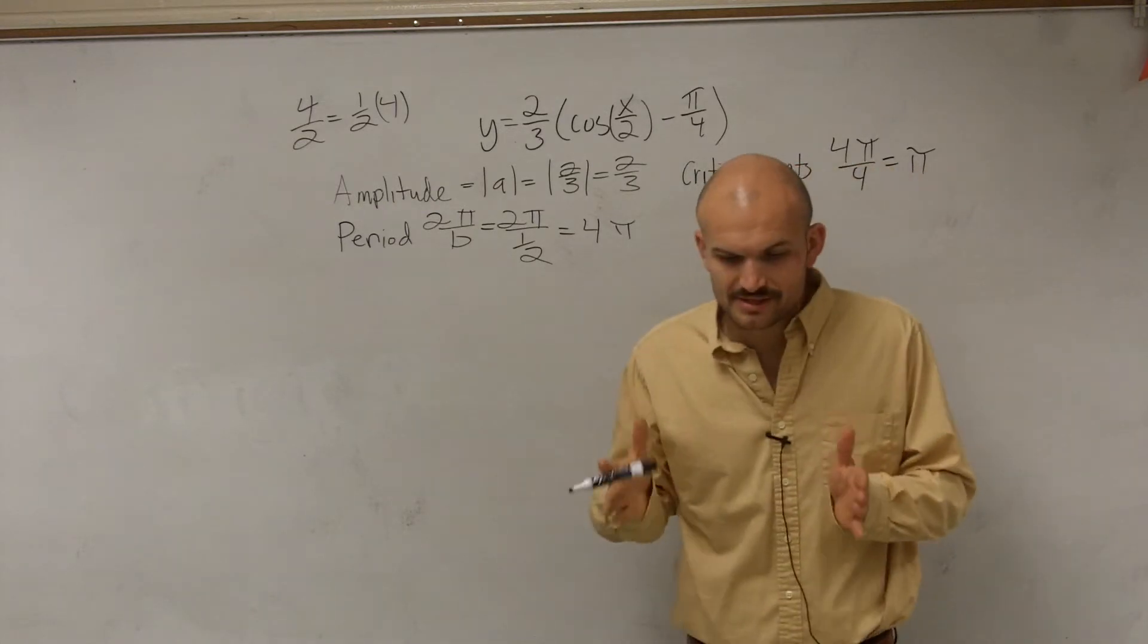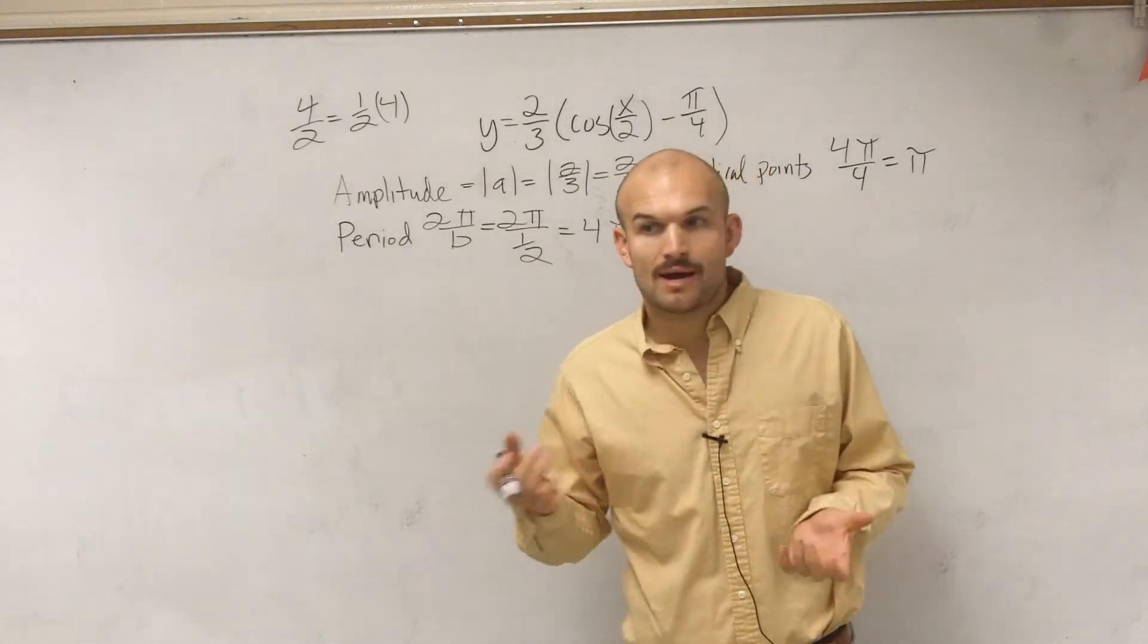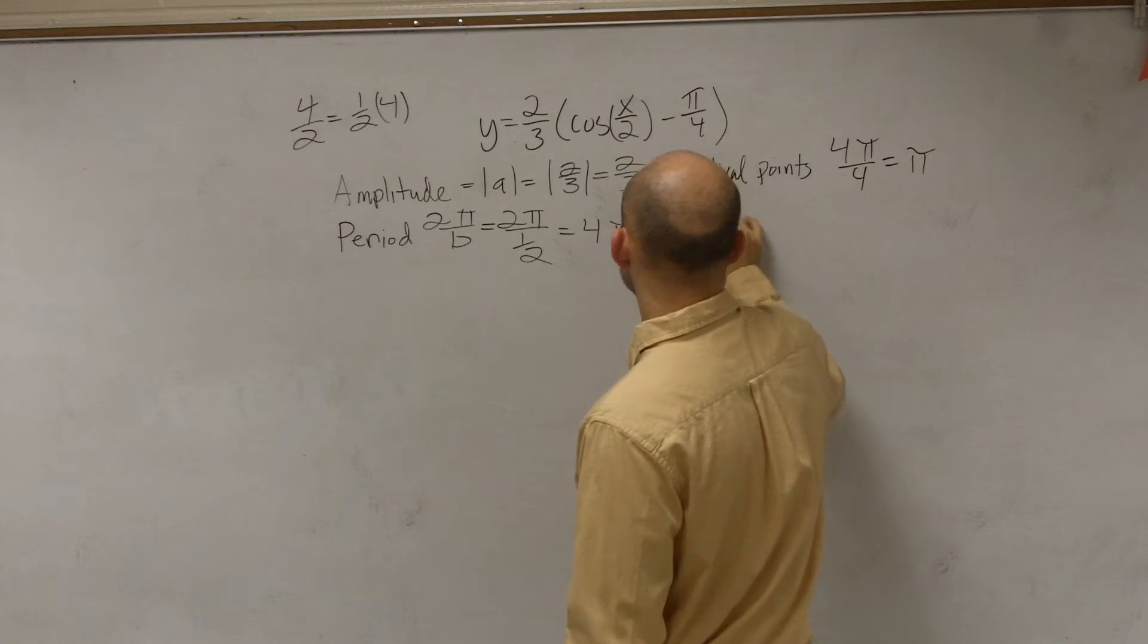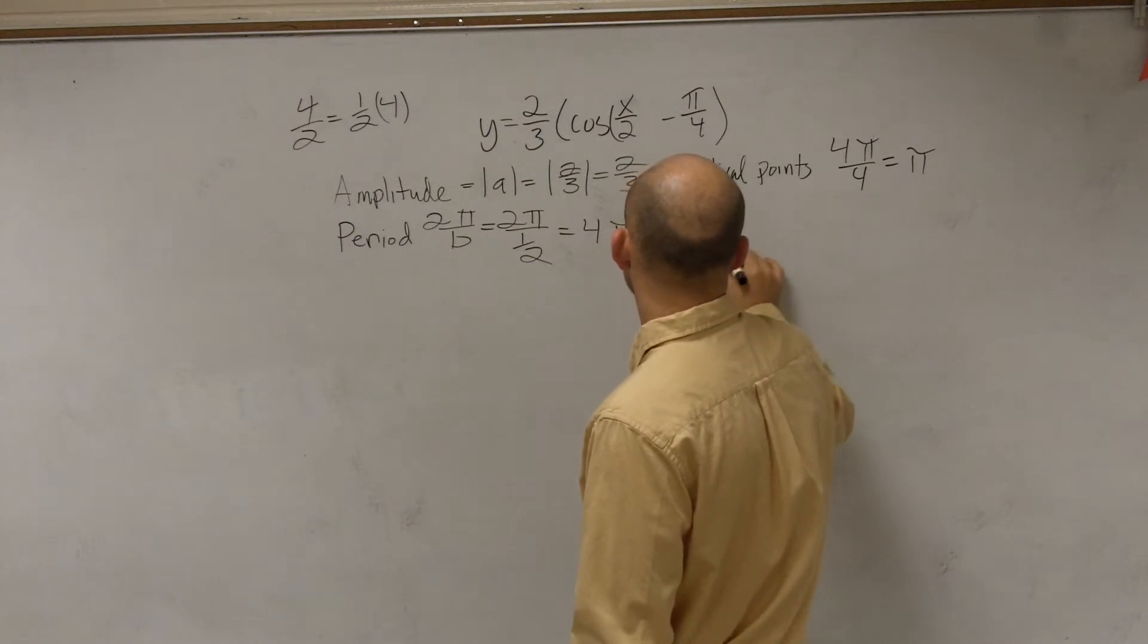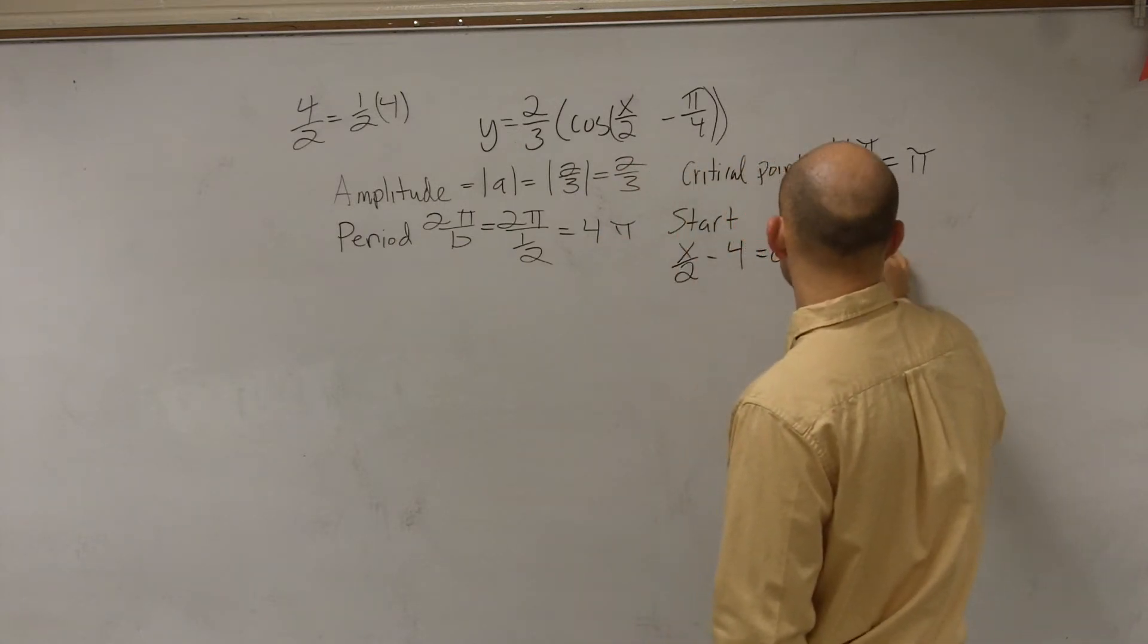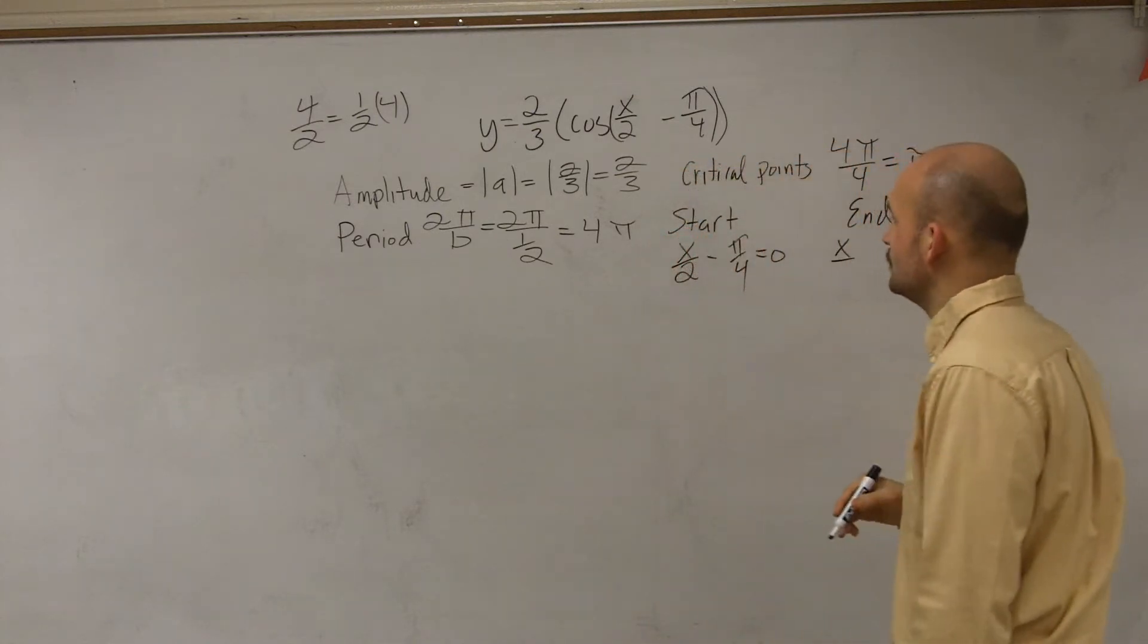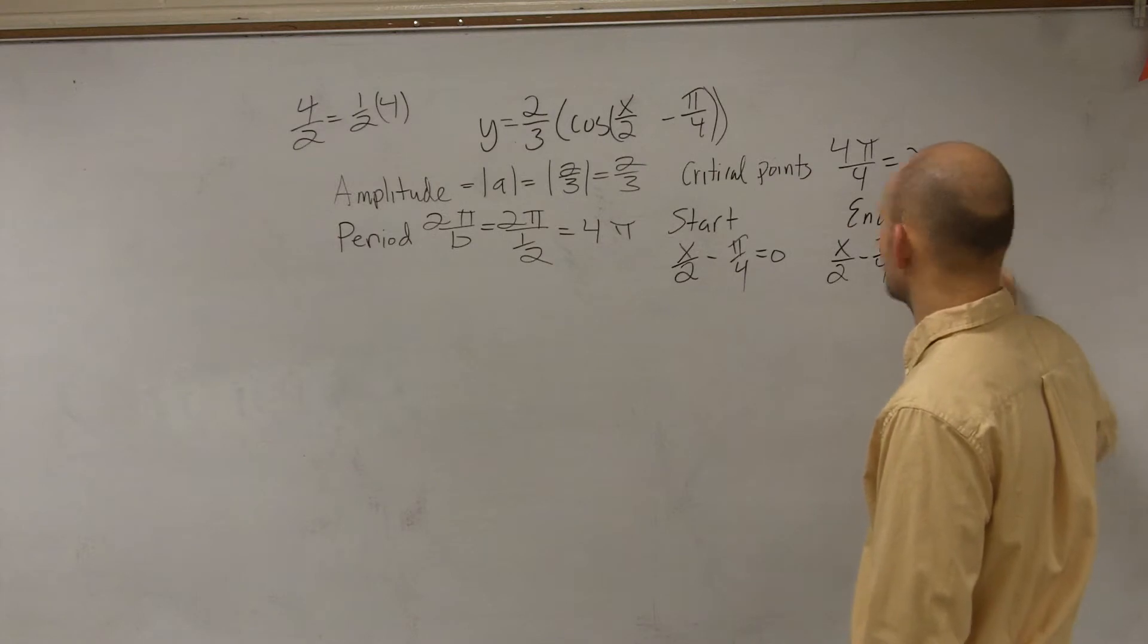Then, if you guys remember, when we graphed the parent graph, we started at zero and ended at 2 pi. So I want to see, is this transformation going to affect our period at all? So what we do is you take everything that's inside your function. So you're going to have x divided by 2 minus pi over 4 equals 0 and your endpoint is going to be x divided by 2 minus pi over 4 equals 2 pi.